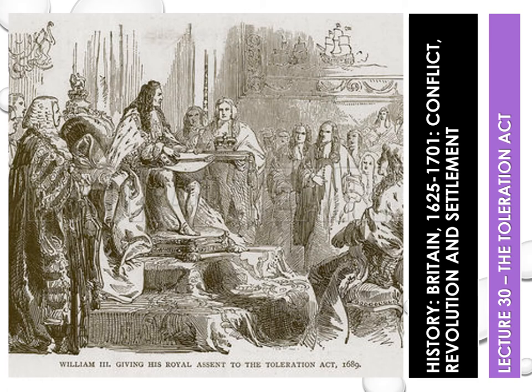As a result, dissenters did not have to attend the Anglican Church. However, their meetings were monitored. Also, because groups like the Quakers refused to take oaths, they were allowed to declare their denial of the Pope's authority.